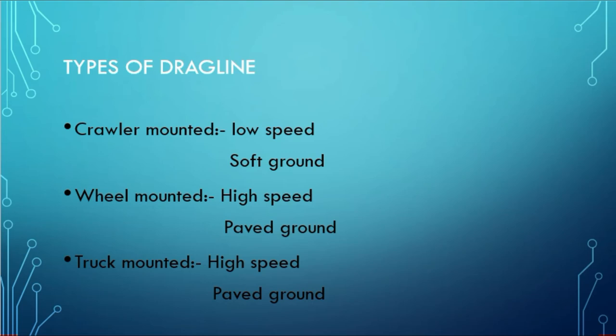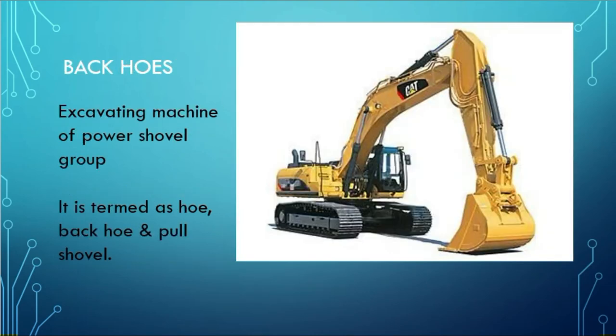The drag line is classified into two types. There is a crawler-mounted drag line — its speed is low and it can handle soft ground. And there is a truck-mounted drag line — it has high speed and can travel over hard ground. The truck-mounted type provides high speed mobility over the ground.